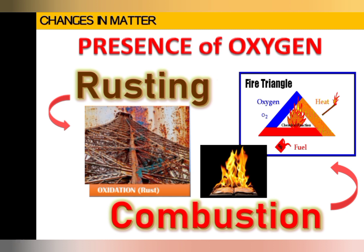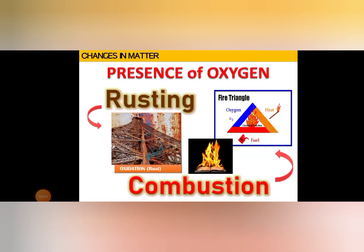Combustion needs, according to the fire triangle, oxygen, heat, and fuel. If any one of these three is not available, it is not possible for combustion to happen. Rusting is formed by the reaction of iron and oxygen, so we usually put paint on iron to prolong the time before rusting occurs.